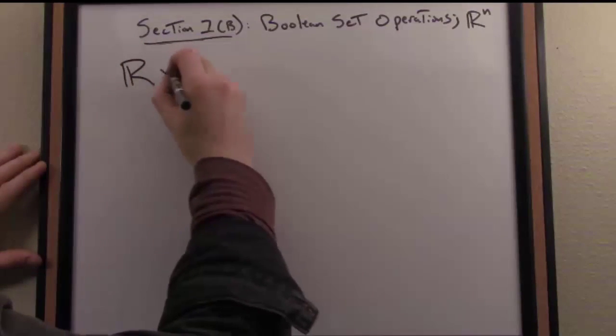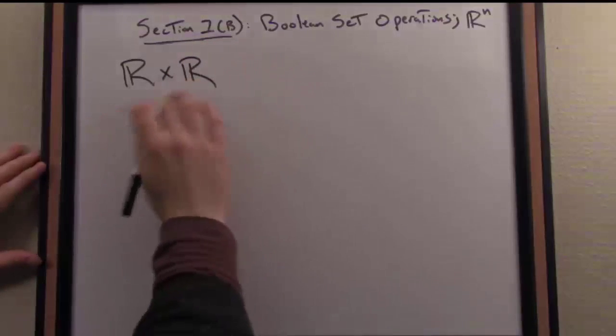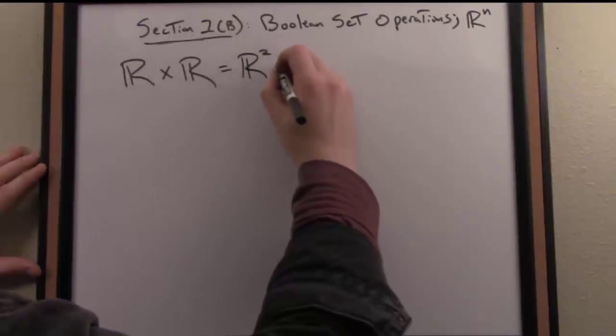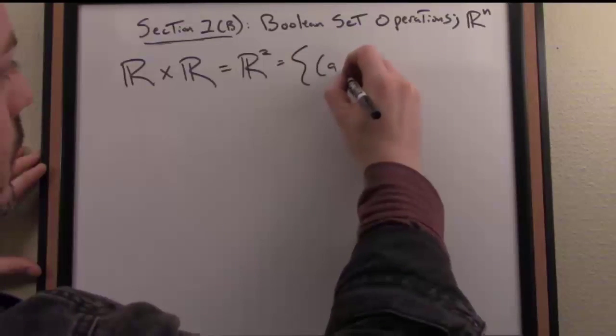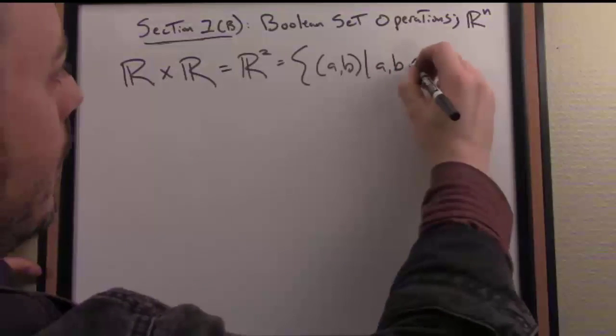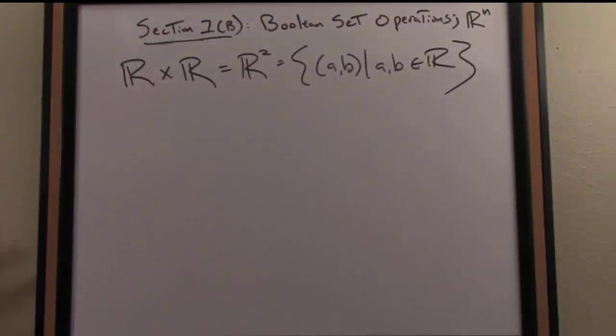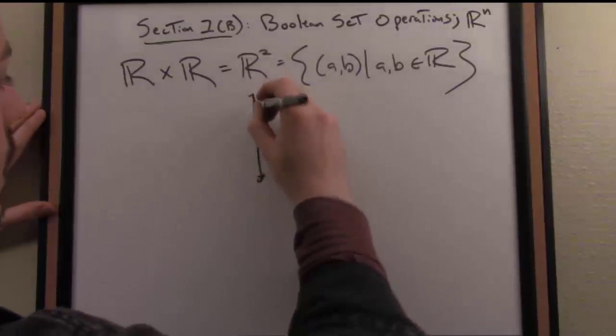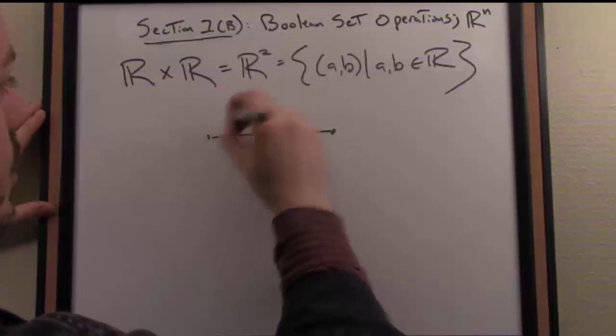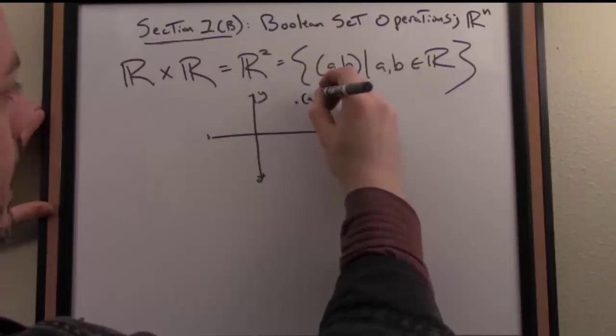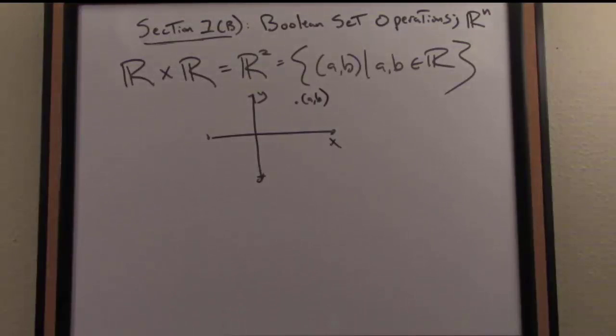So then what happens if I take the real numbers cross the real numbers or the Cartesian product of the real numbers? Well, I can shorthand that as R². And by definition, that's the set of all ordered pairs A, B, where A and B are real numbers. So what's the geometric meaning of that? Well, that's nothing other than something we're probably quite familiar with, the two-dimensional plane. We have an x-axis and a y-axis. In other words, if I identify the x and y coordinates of any point, I can uniquely locate that point in the plane.